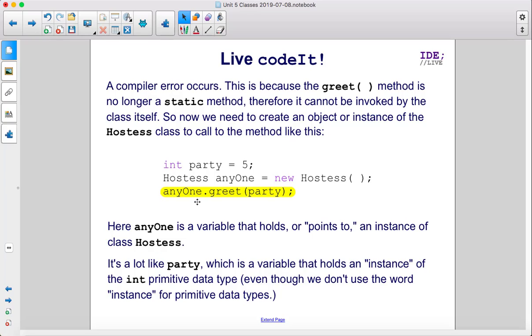Here, anyone is a variable that holds or points to an instance of class hostess. It's a lot like party, which is a variable that holds an instance of the int primitive data type, even though we don't use the word instance for primitive data types.